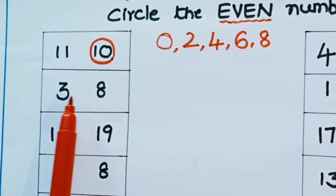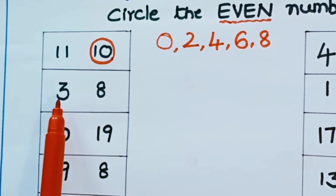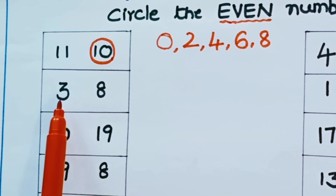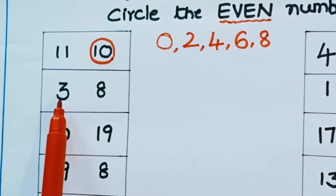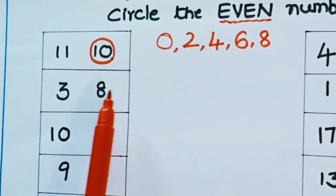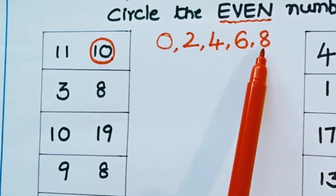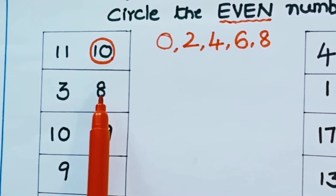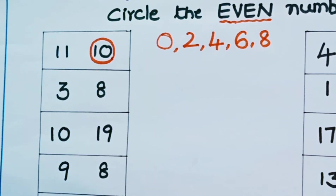Now look at the next row. The numbers given are 3 and 8. Is 3 an odd number or even number? It is an odd number. 8 is an even number. So we should circle 8.